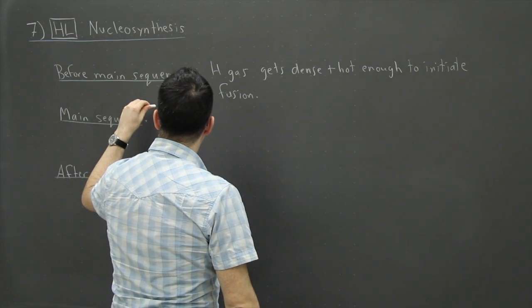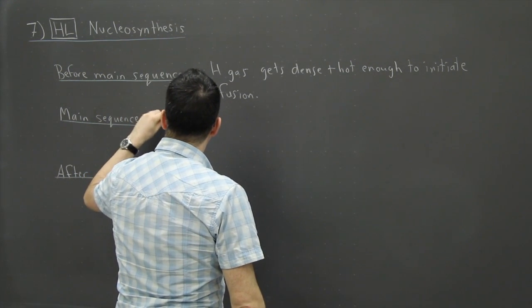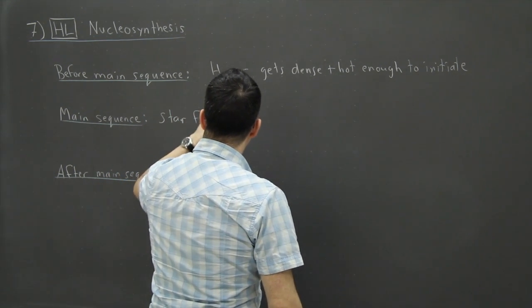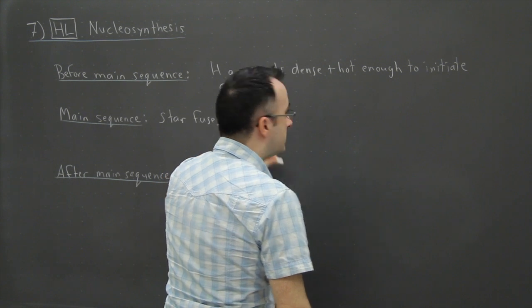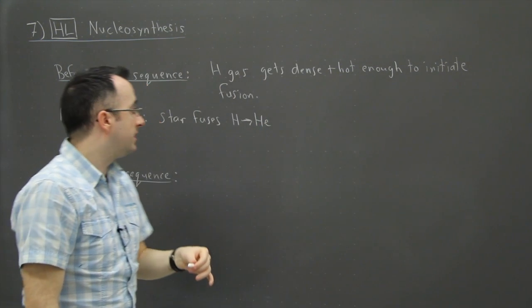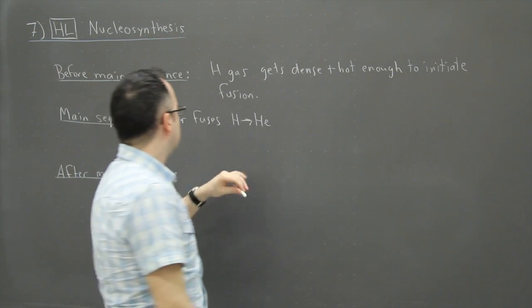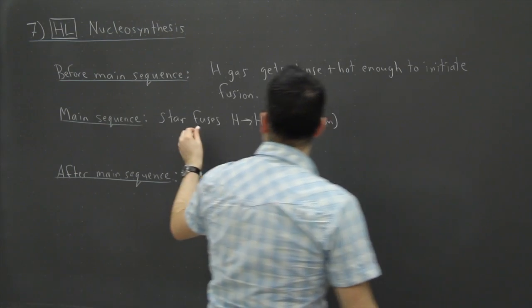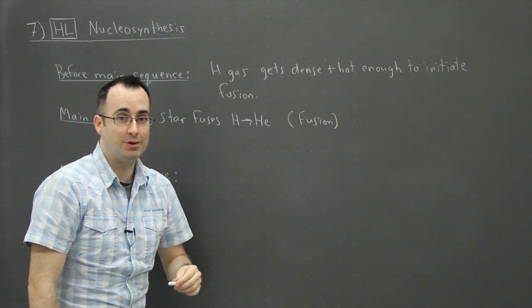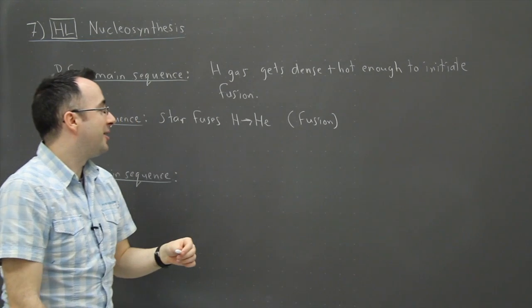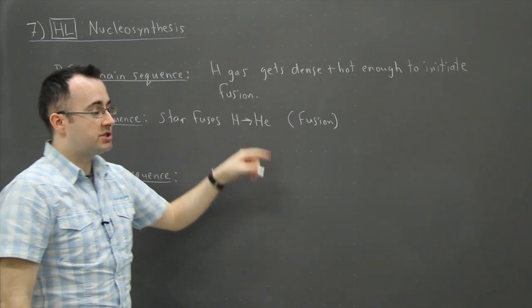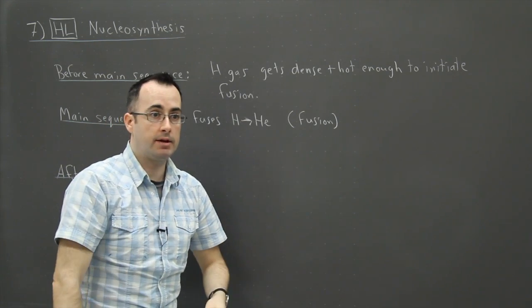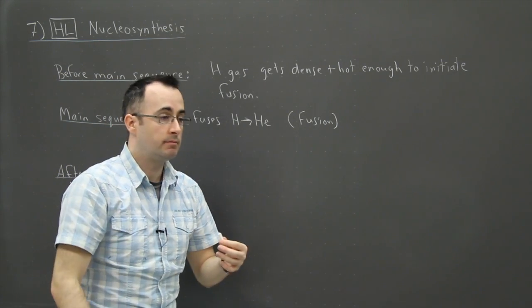So here the star fuses hydrogen to helium. This is the main process going on in a star here. We'll call it fusion. But this right here is mainly what the star is doing. It's converting hydrogen to helium. And of course, it gives off energy and there's also lots of light and there's lots of heat.